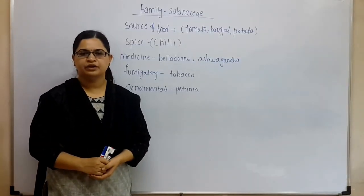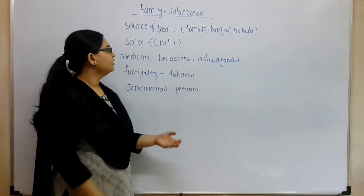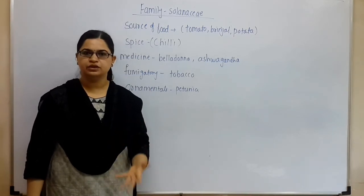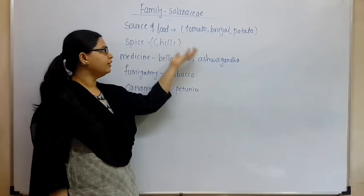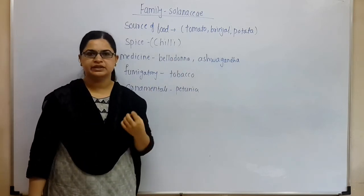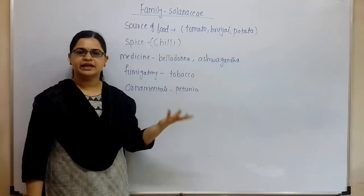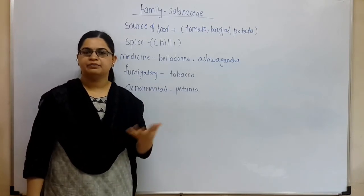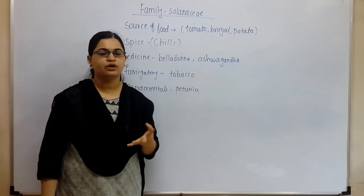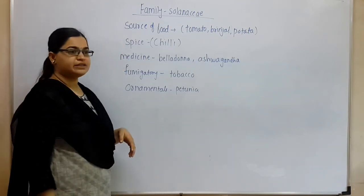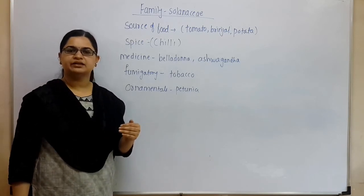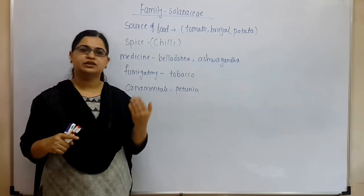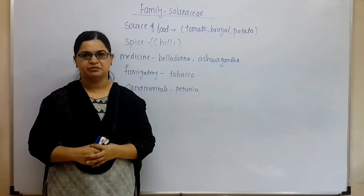Now we will discuss the economic importance and examples of the Solanaceae family. Most family members are a source of food: tomato, brinjal, and potato are examples of the Solanaceae family used as vegetables. This family is also a source of spices — chillies are the best example. Green chili, red chili — remember these are members of the Solanaceae family.